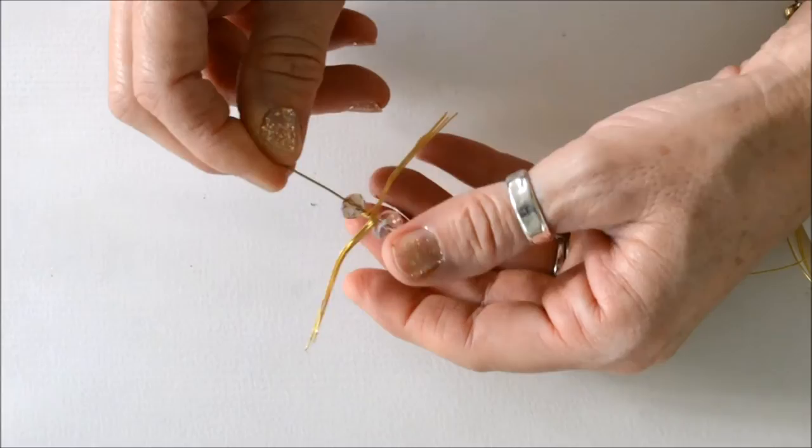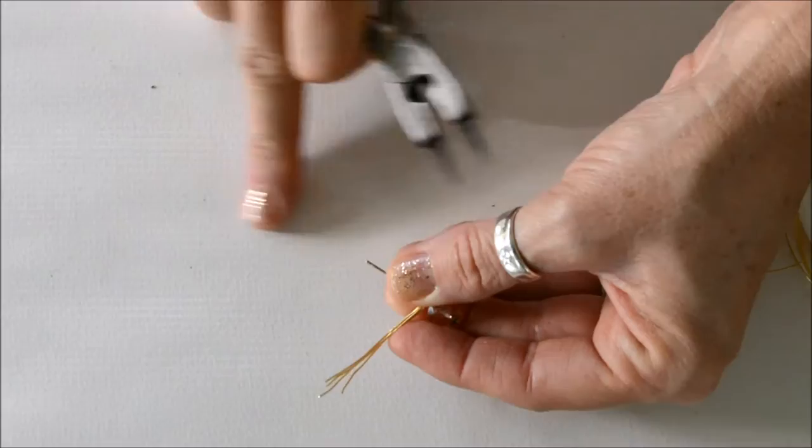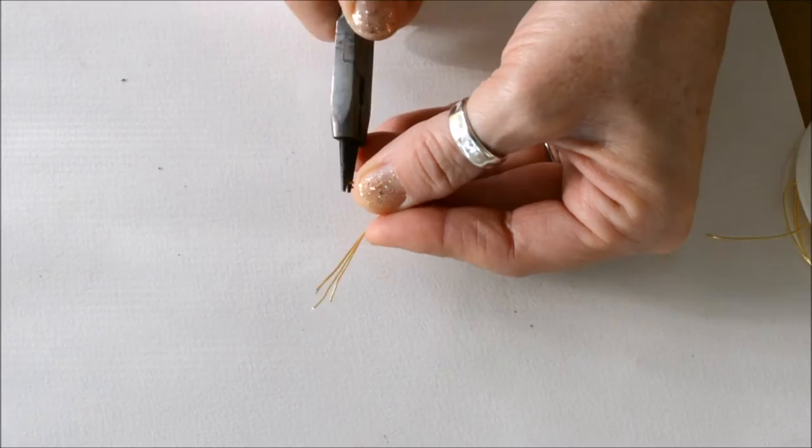So now you're going to trim off the end of your head pin enough to make a loop, a little loop here. This is going to be the top of your charm so you can hook it to wherever you would like.